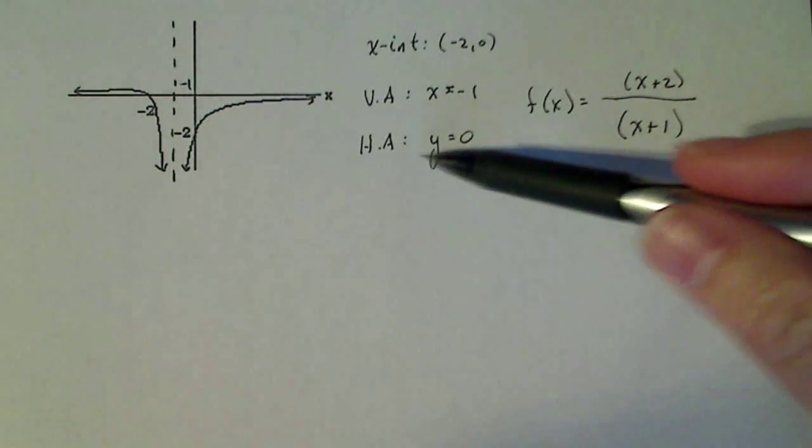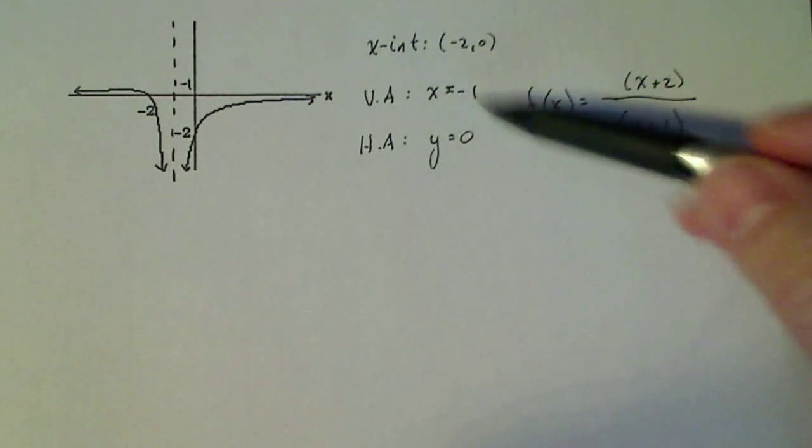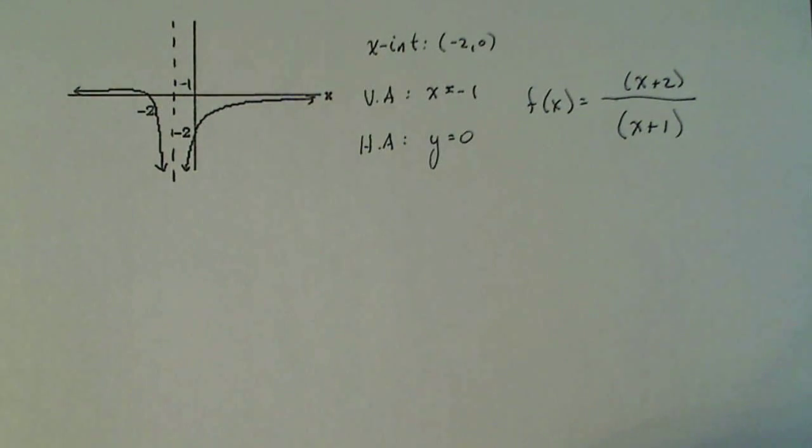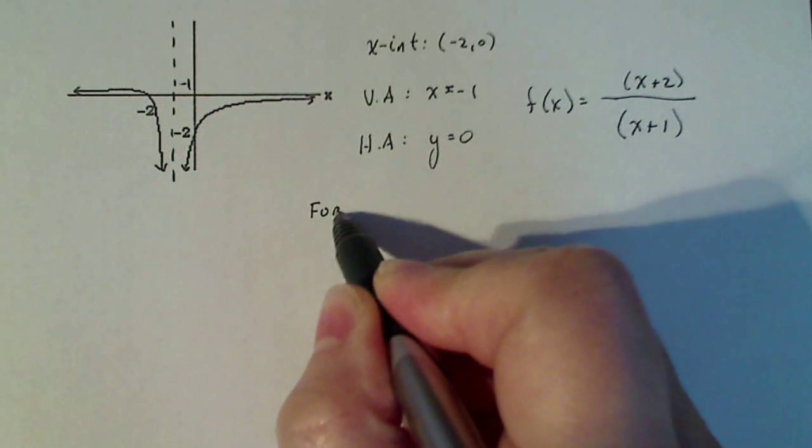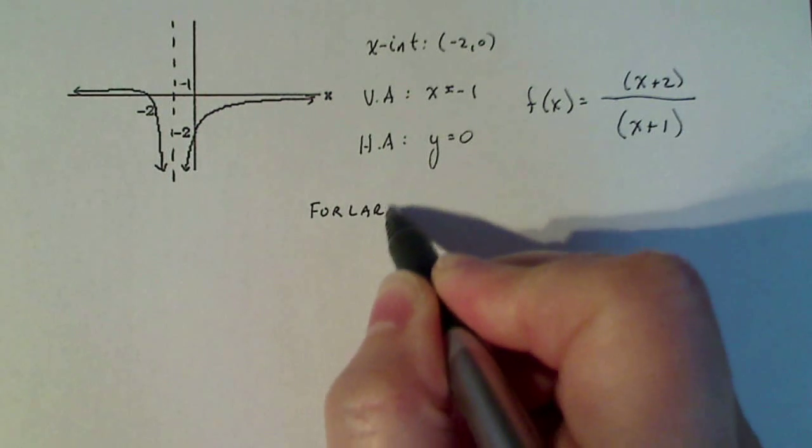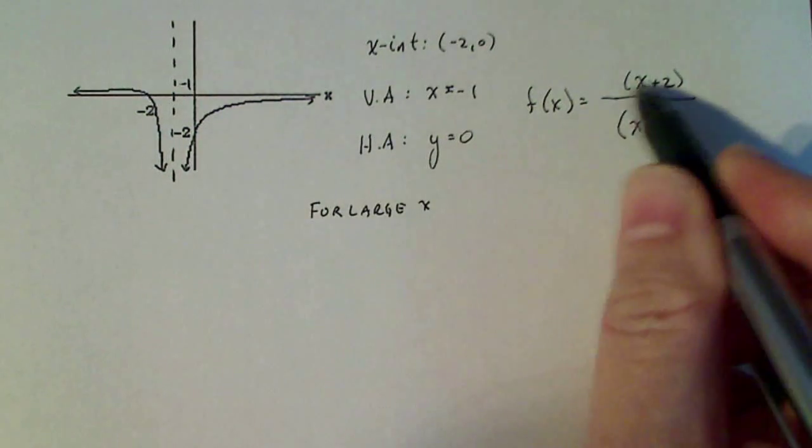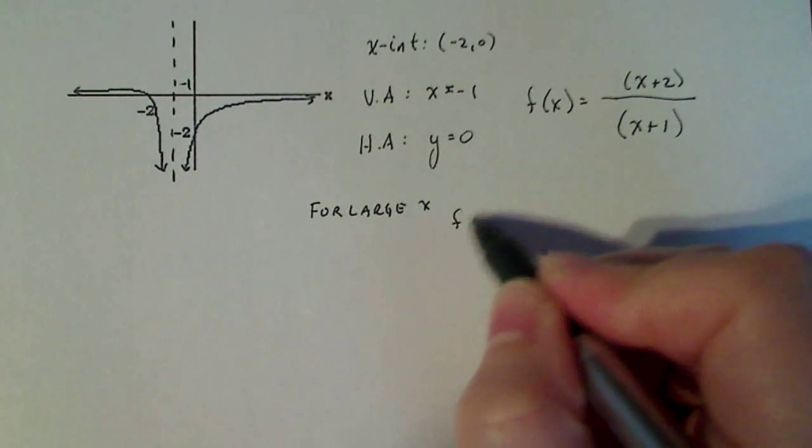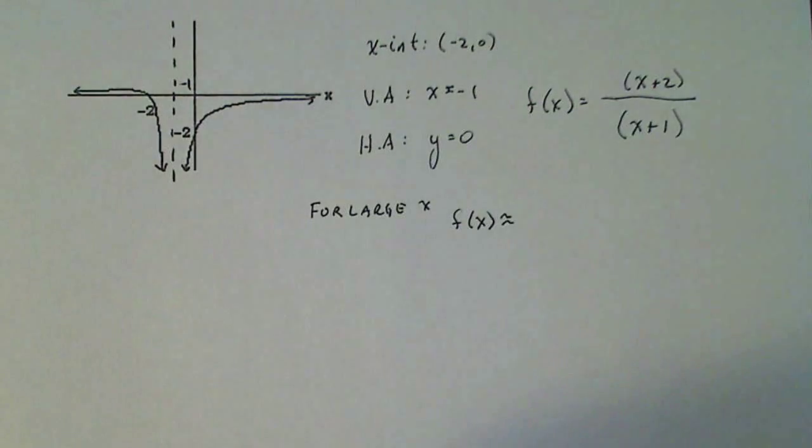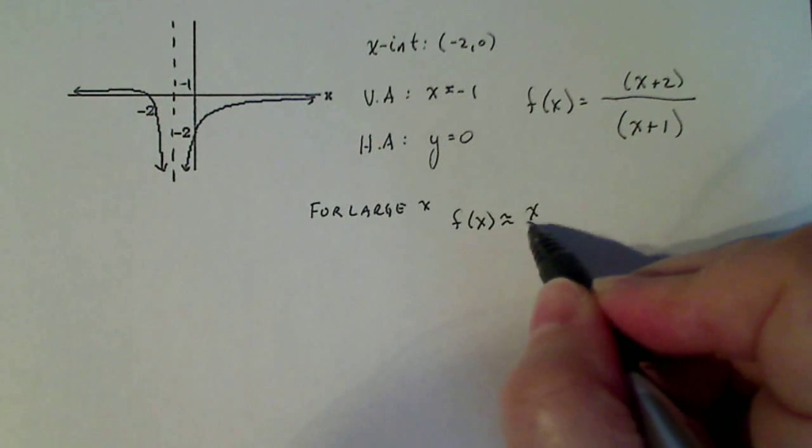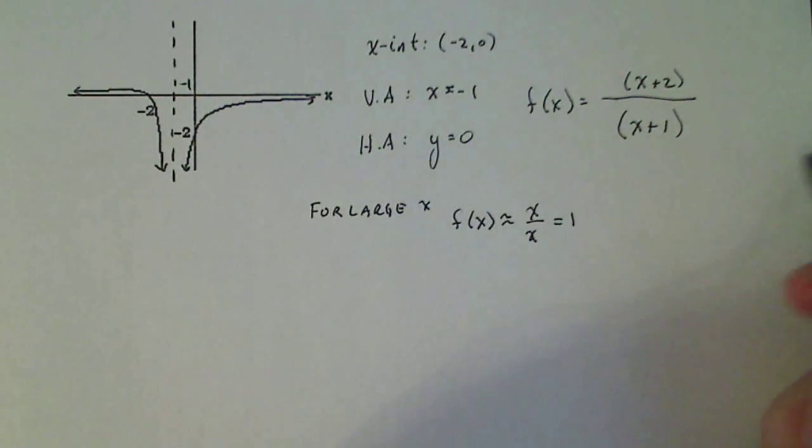Now I need a horizontal asymptote at y equals zero. And this is where the challenge comes in. If I think about for large x, what f of x does. So for large x, I only have to look at the dominating terms. So that means f of x in right now what we have, f of x is equal to x over x, which gives me one. Well, I want my horizontal asymptote to be zero. So the only way that's going to occur.